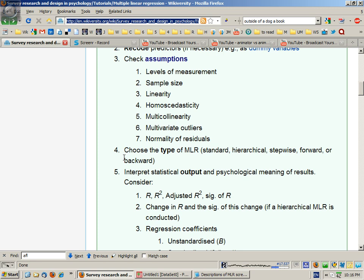The fourth step in doing an MLR is to choose which type of MLR you're going to use. The choices are between standard or direct MLR, which is probably what you're going to do if you don't know what else to do. It's the most common and readily utilized technique.